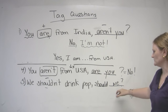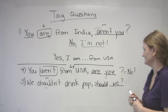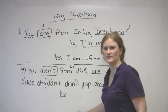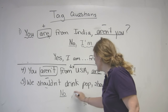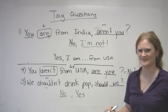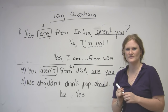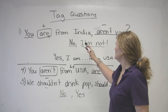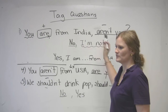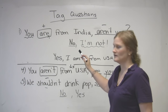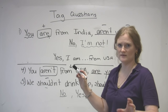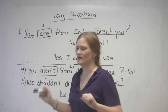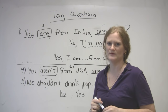'We shouldn't drink pop, should we?' If you agree with this, you're going to say no. If you disagree, you're going to say yes. The hardest part is deciding if you're going to say yes or no — that's up to you. So when we make tag questions, it's pretty easy answering them. To make it easy, just do as natural speakers do and just say yes or no, and smile — that'll help you a lot.